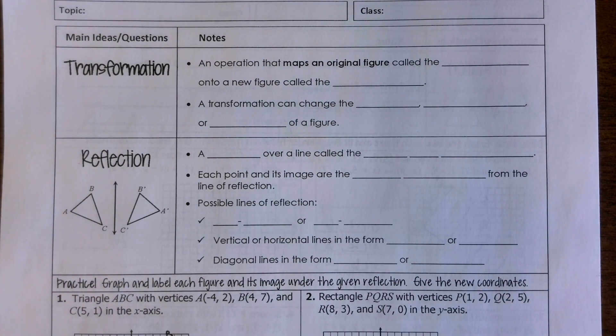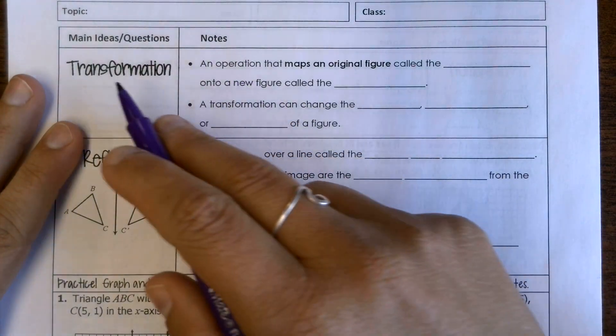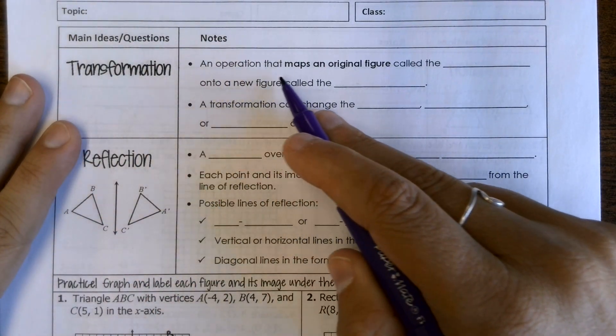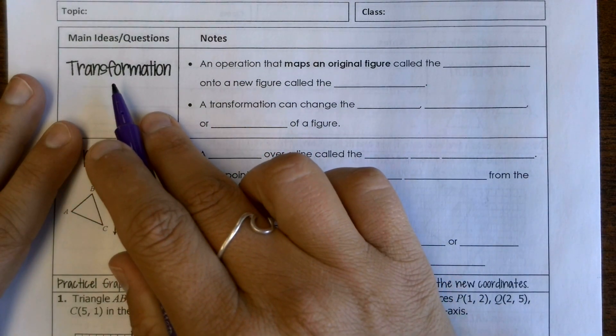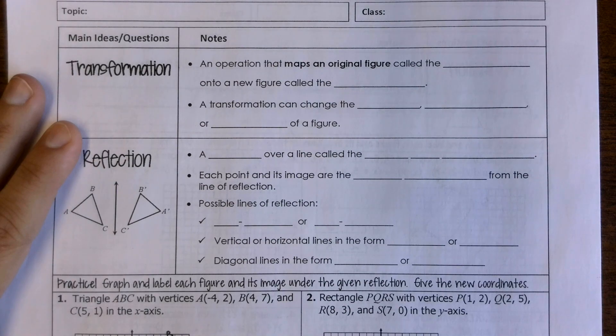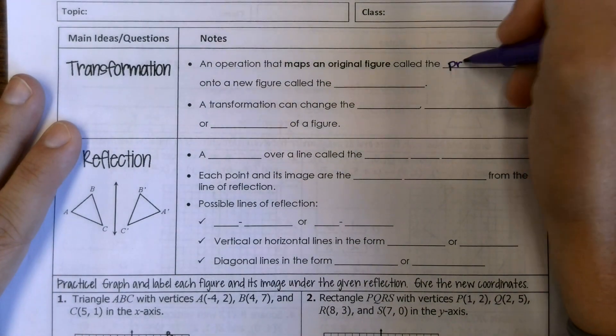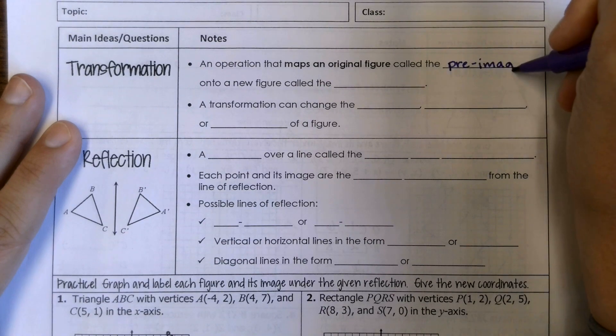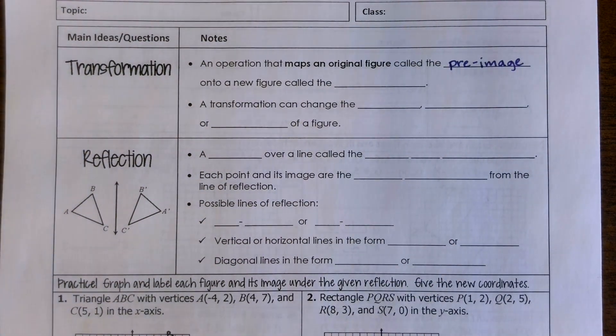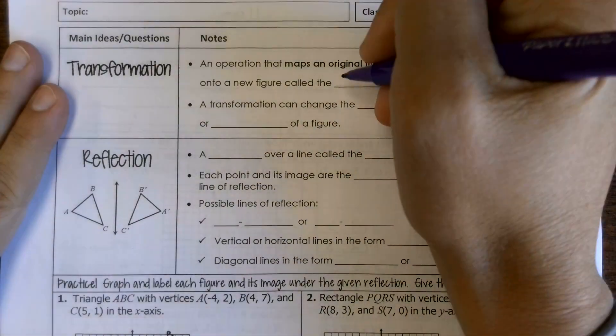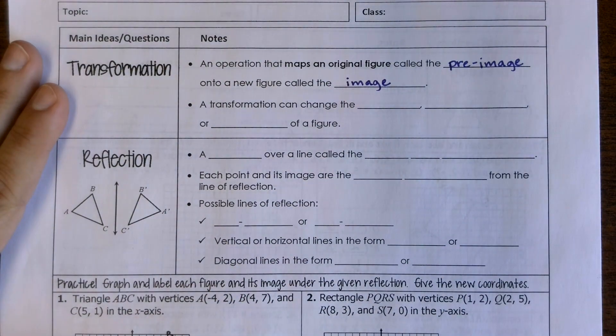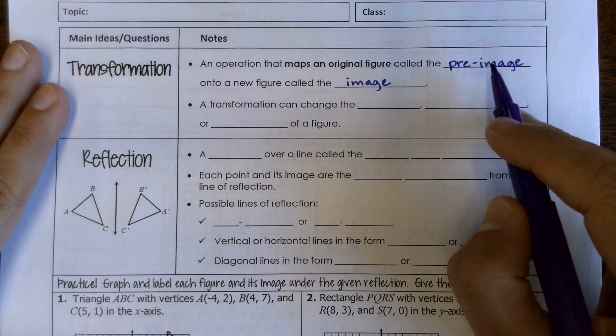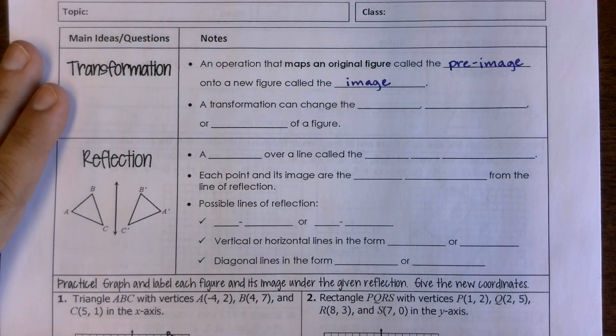So first, some important vocabulary here. If we are moving, if we're doing a transformation and changing some figure from one form of that figure to another form of that figure, this operation is called a transformation, but we call that original figure the pre-image. So that would be your original, whatever you're dealing with, and then that new image that you create is called the image. It's a little weird because we would think whatever we're starting with is the image, and then maybe we create something else, but we've got a pre-image, and then the image is whatever you create from that.